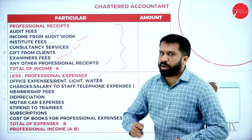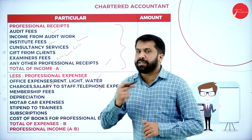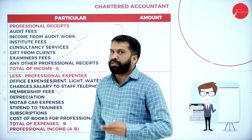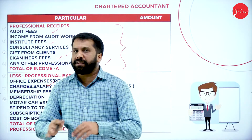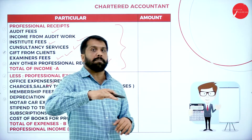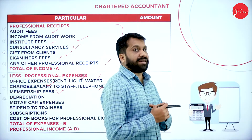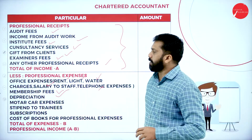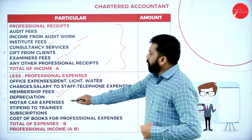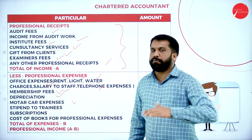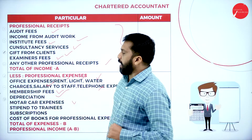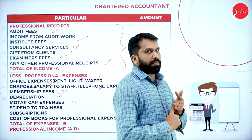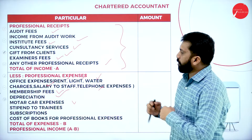If you want to be a CA for the long term, you have to renew your membership and pay membership fees. You also have a printer and photocopy machine at your office, and you charge depreciation on those — that is professional expenditure. You also travel from your office to clients, so car repair charges, fuel charges, and depreciation on motor car all come under your professional expenditure.